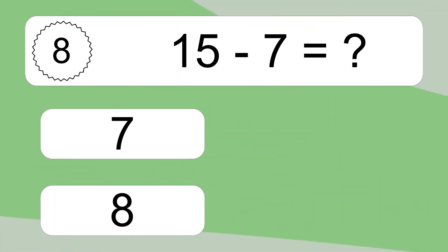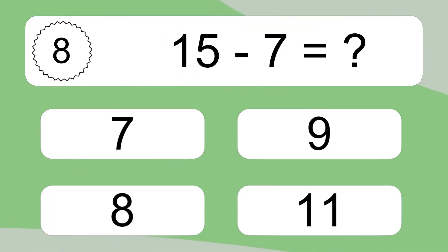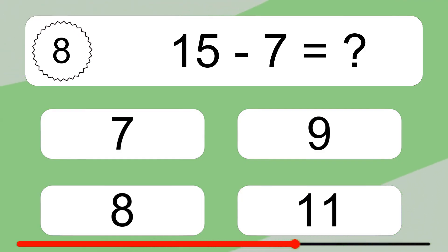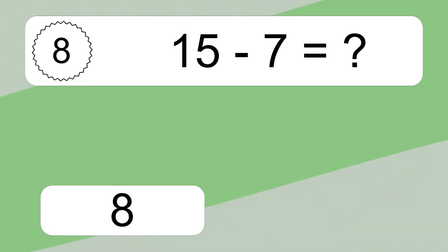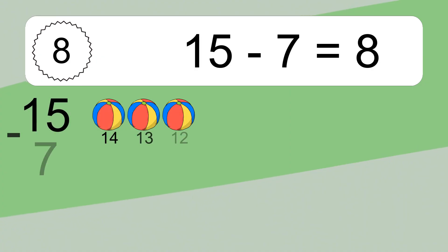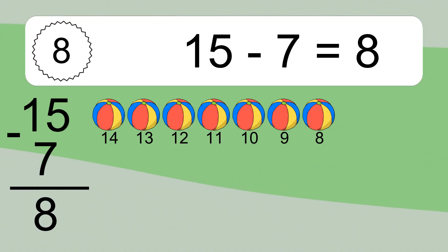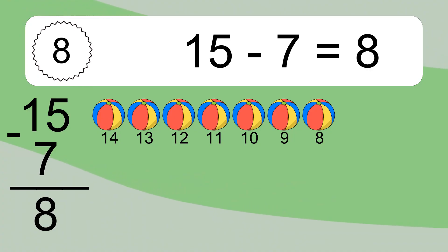15 minus 7 equals what? 15 minus 7 equals 8. Let's count it: 14, 13, 12, 11, 10, 9, 8.